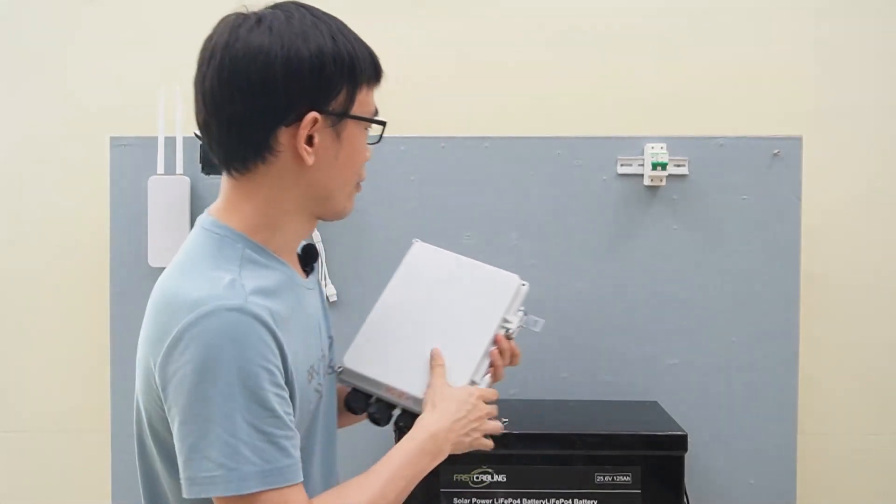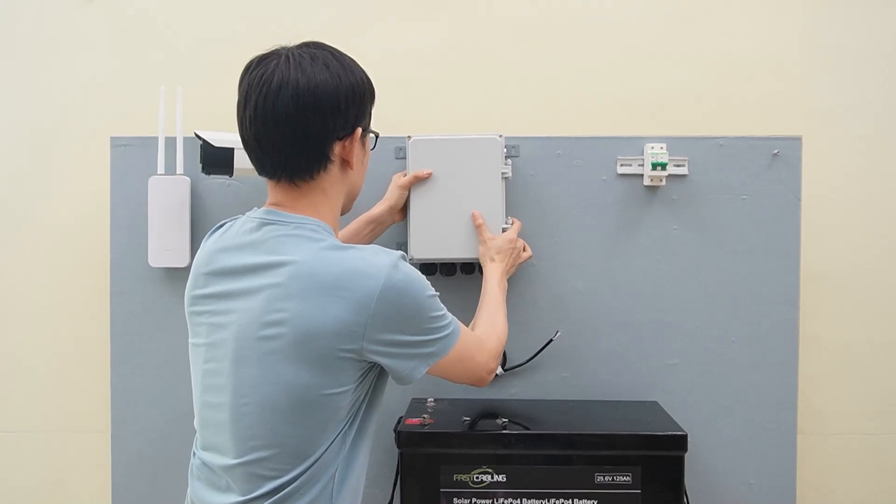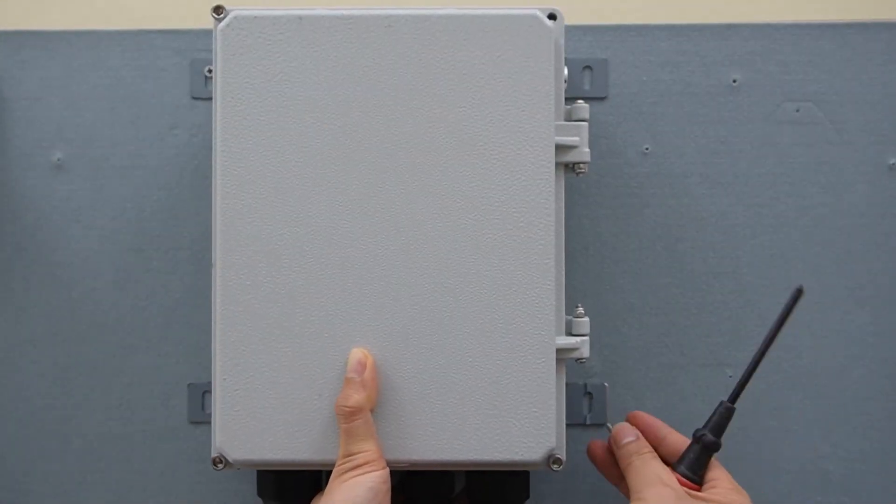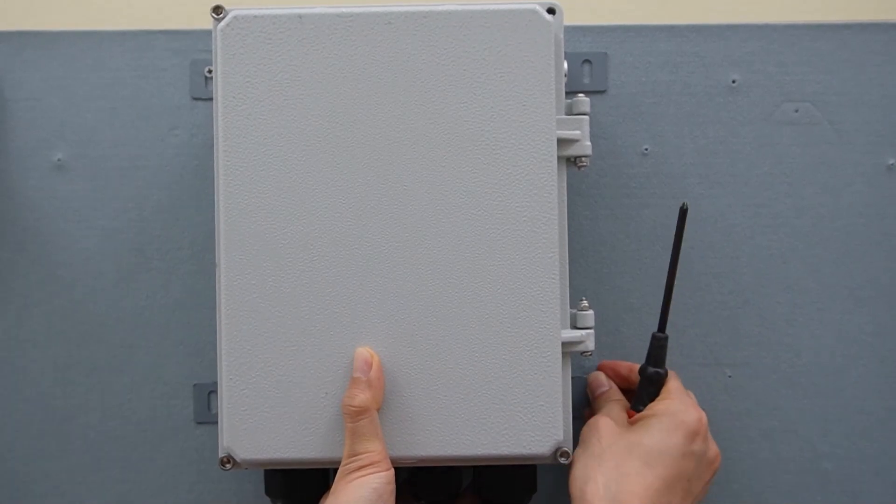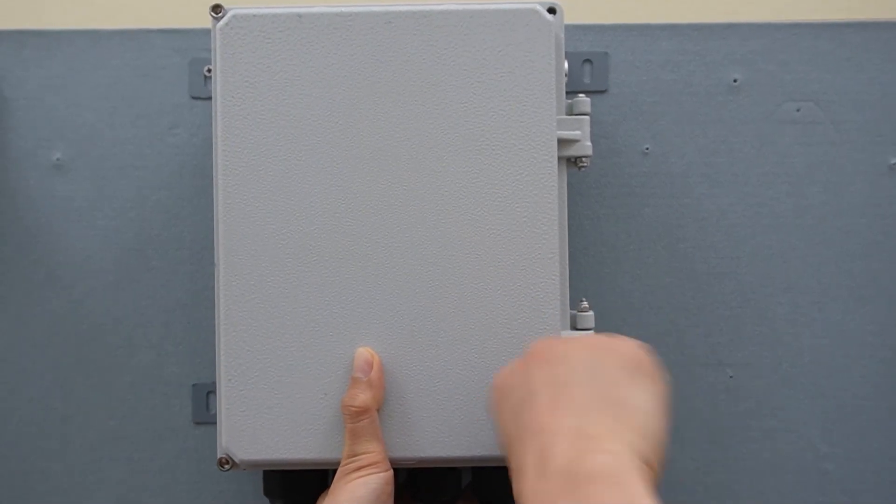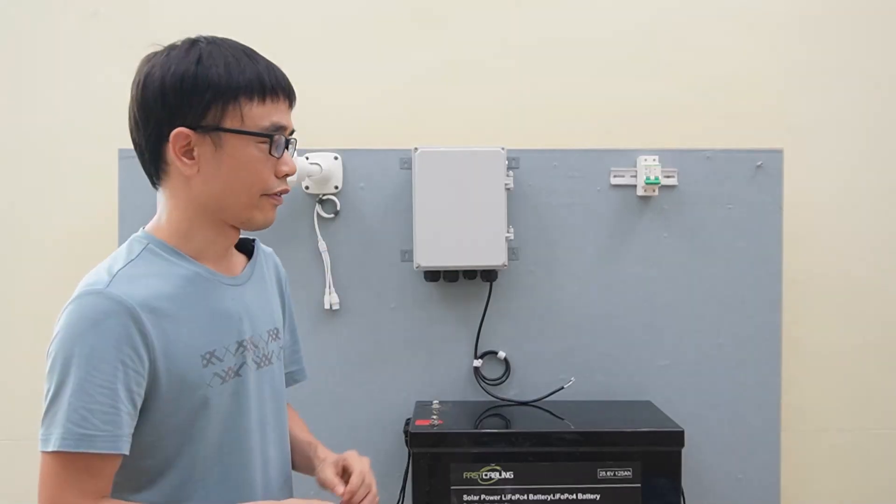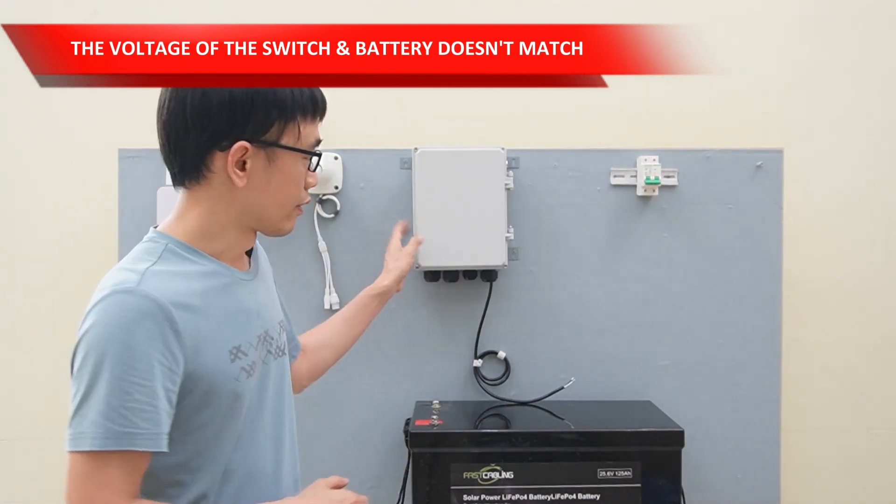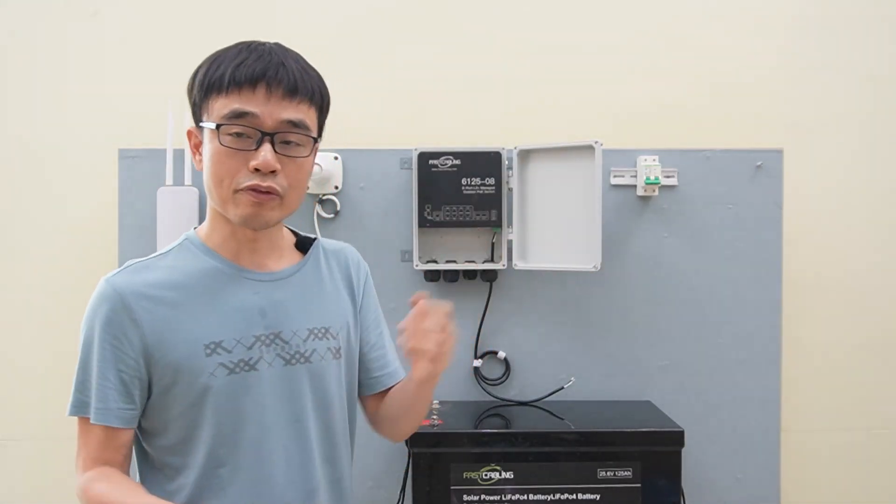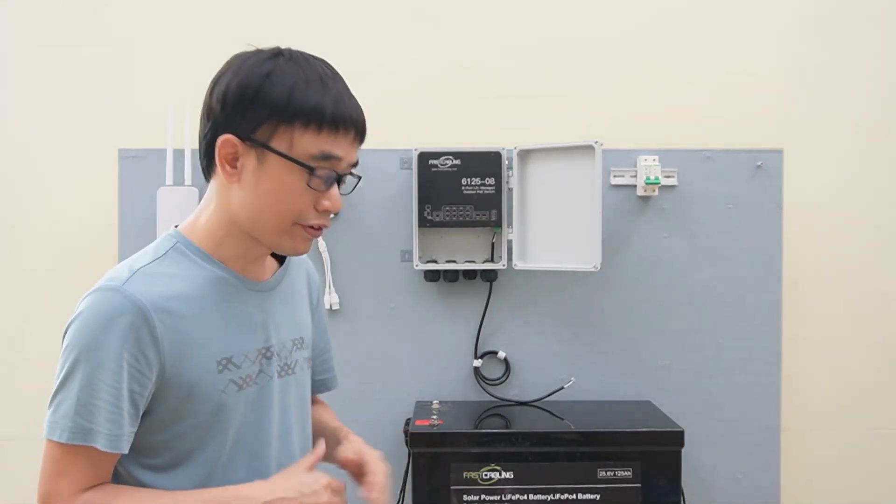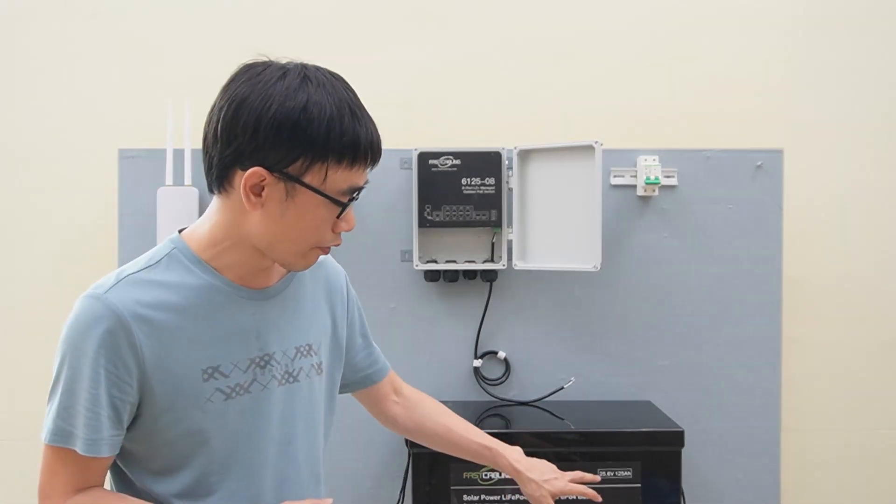Now let me attach this outdoor PoE switch to the wall. The outdoor PoE switch is on the wall. The voltage doesn't match. The PoE switch requires the input voltage between DC 48 to DC 57V, and this lithium battery outputs DC 25.6V.